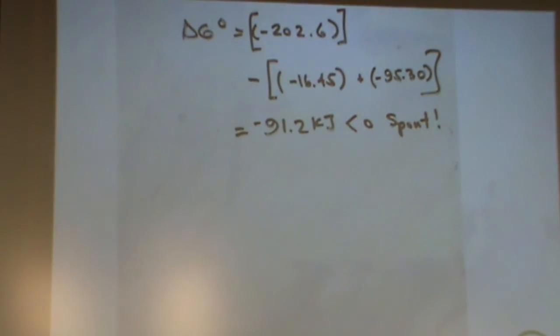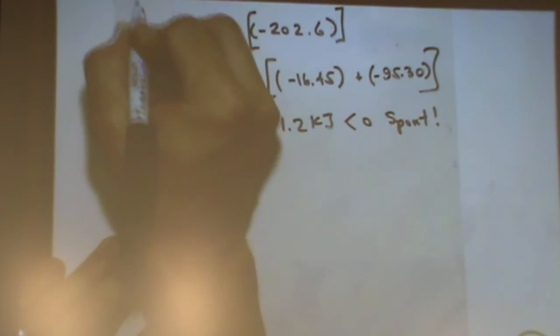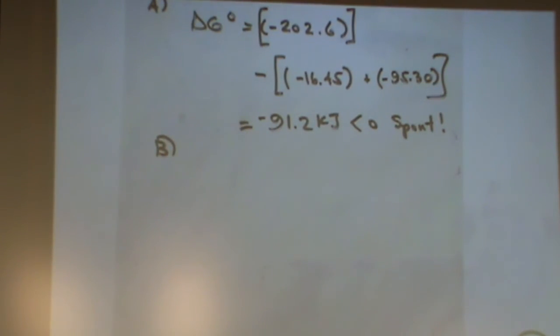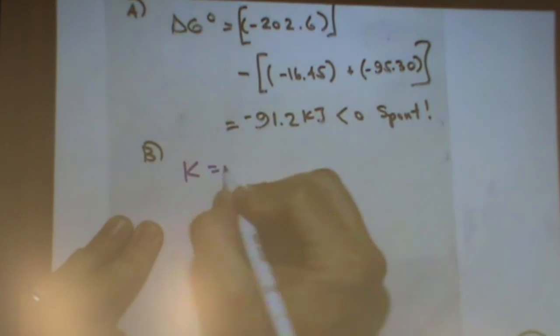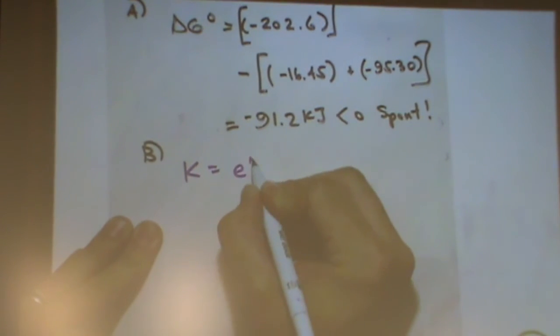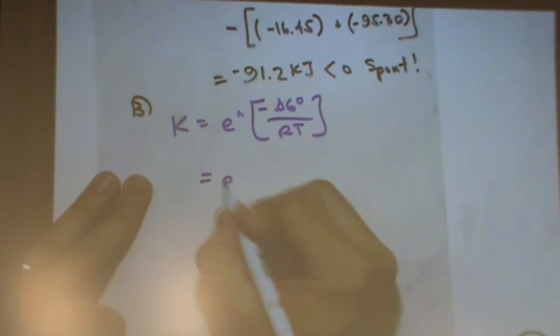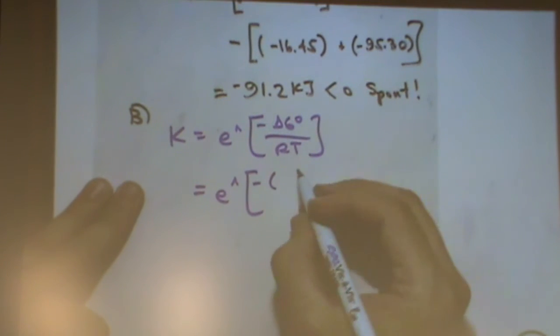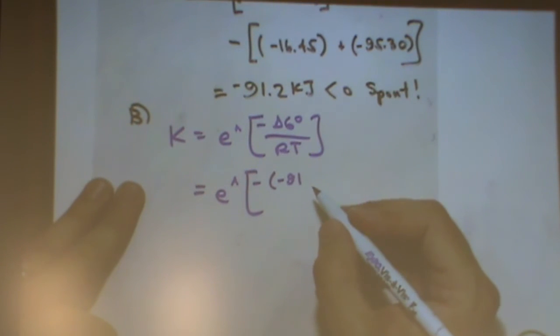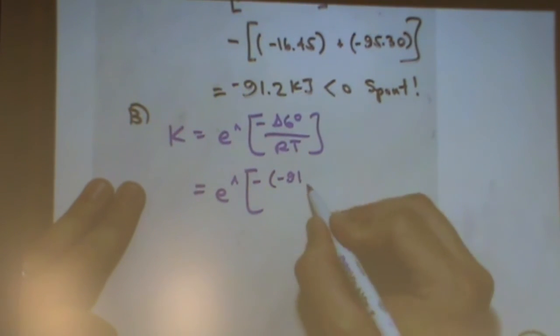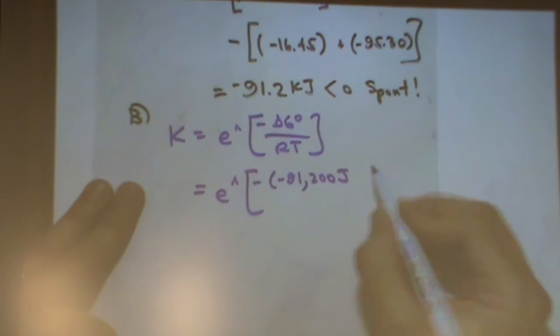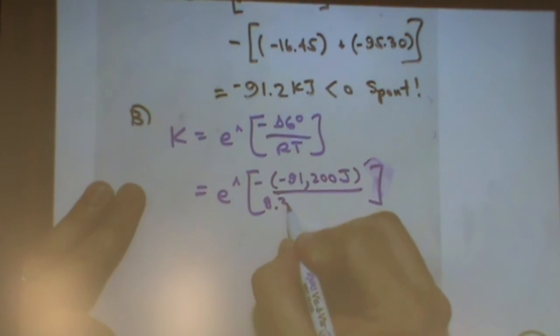All right, part B was find K, so this was part A, part B, find K. It's the other equation that was on that sheet, solve for K. It's E raised to the negative delta G standard over RT. So E raised to the negative, and then delta G is negative, but I'm going to write what up here for delta G. Not 91.2. Yeah, 91,200 joules, because R, which is going to go into the denominator, is given in joules, so it just makes my life more convenient. 8.3145, the temperature is 298.